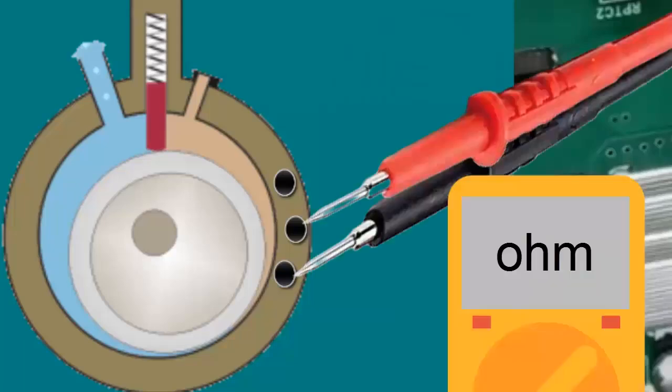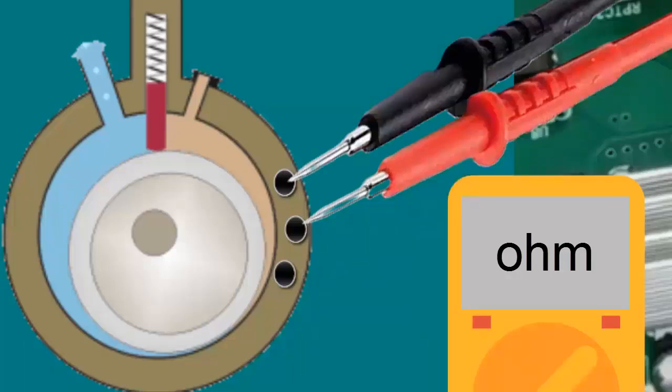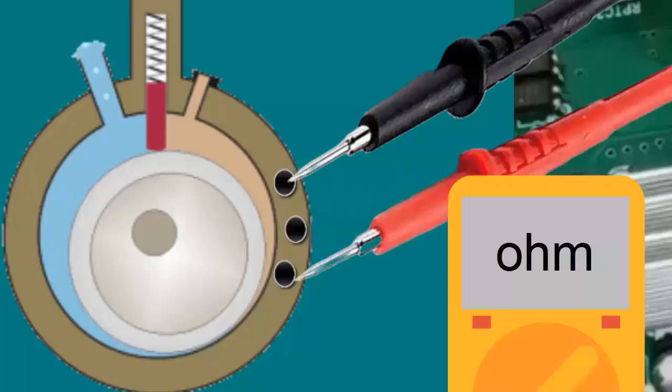D. Verify that the electrical resistance measured between the compressor pins has the correct value. For example, in inverter units, ensure all resistances between pairs of pins have the same value.